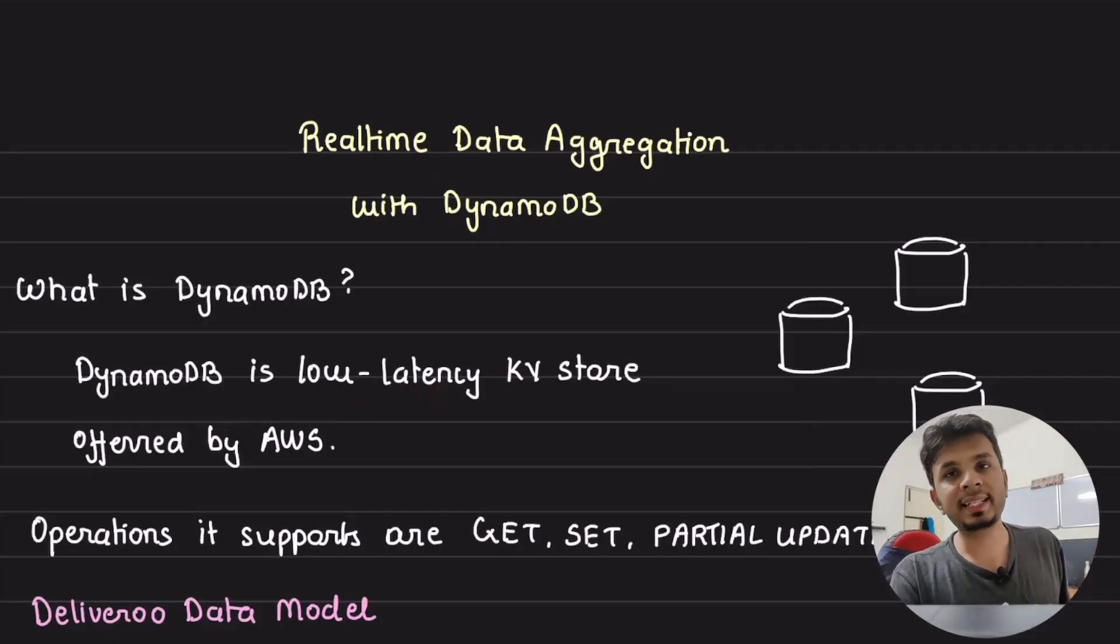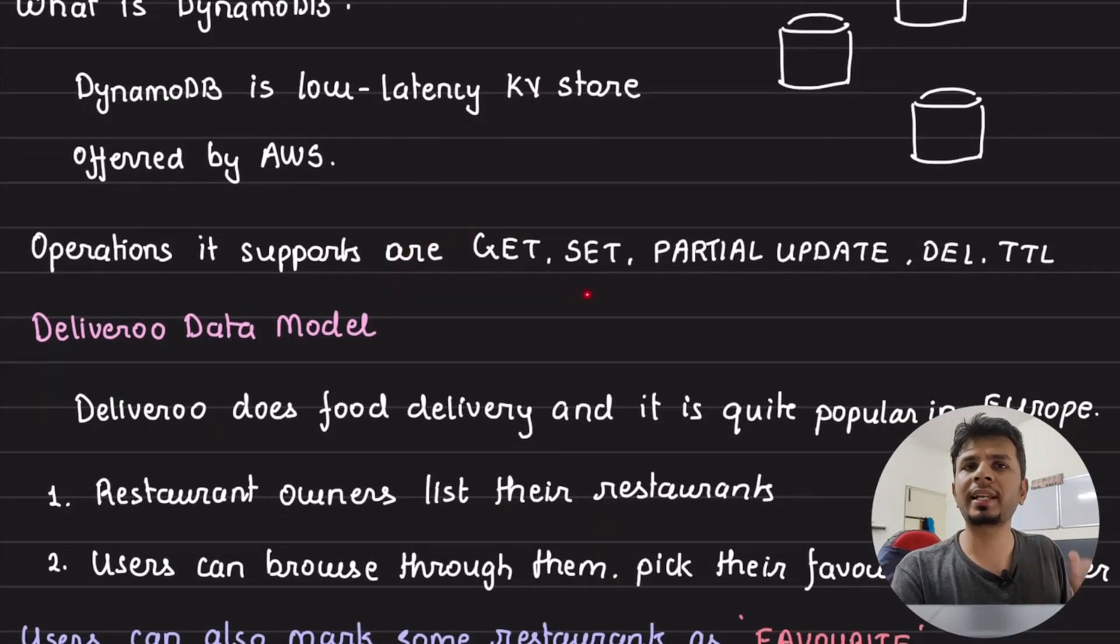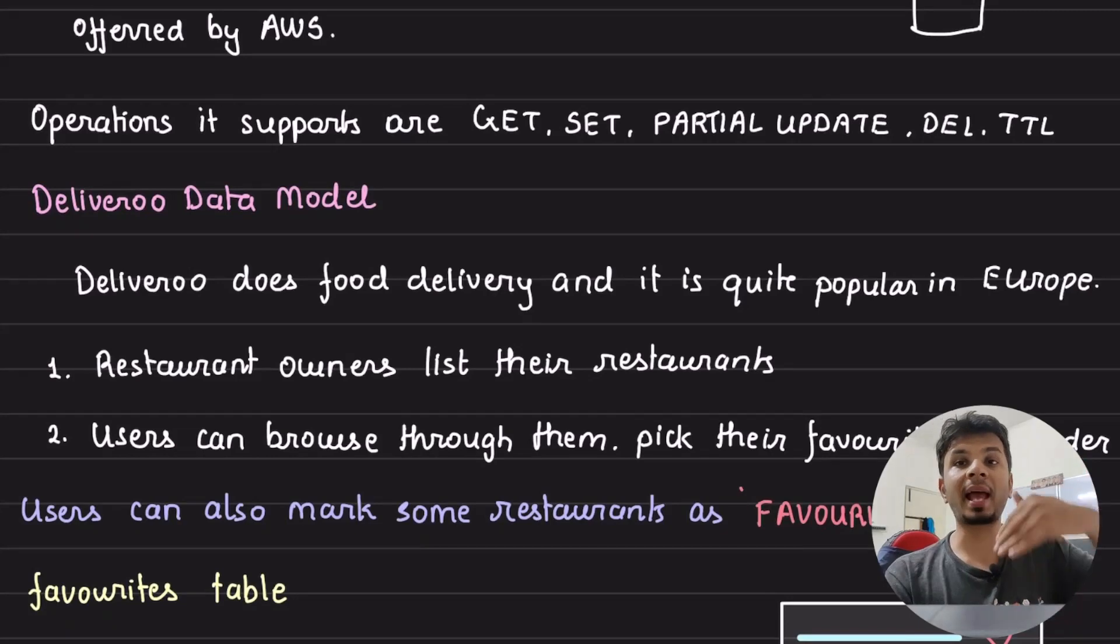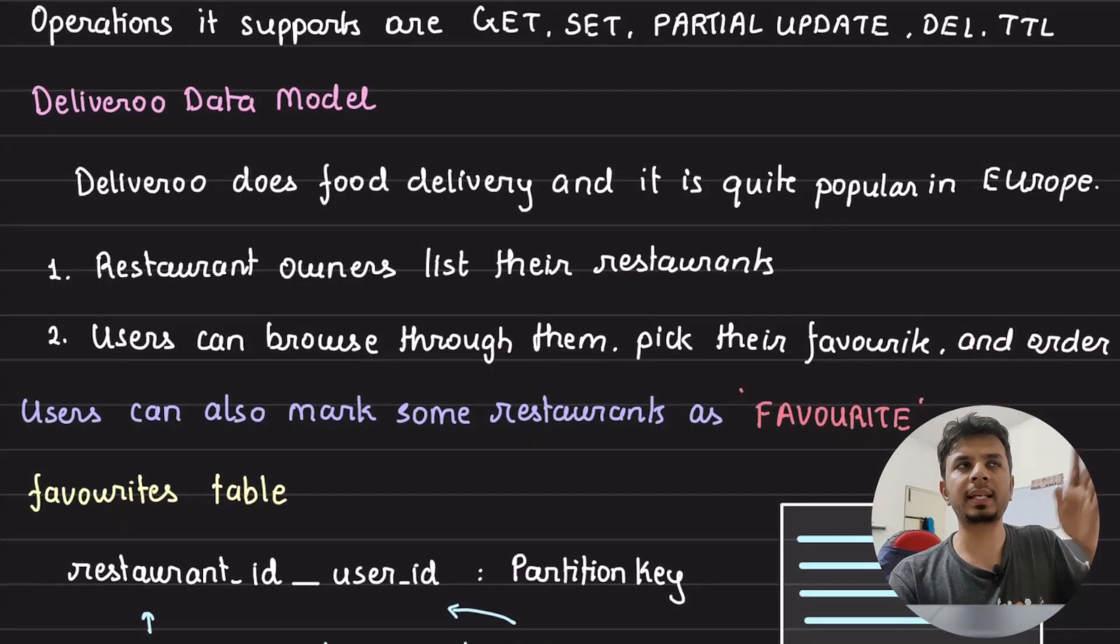So DynamoDB is a low latency key-value store offered by AWS. It supports operations like get, set, partial updates, delete, and expires. But what it does not support is aggregation. So let's say we are building a food delivery app, for example, something like Swiggy, Zomato, or Deliveroo. What we need is a way to show users some aggregated information. Let me take a concrete example. Deliveroo does food delivery and it's quite popular in Europe. Restaurant owners can list their restaurants on the app, users can browse through that, pick their favorite restaurants, and order from it. Very simple, extremely simple idea, but extremely useful and popular.